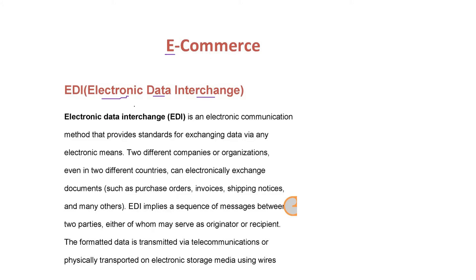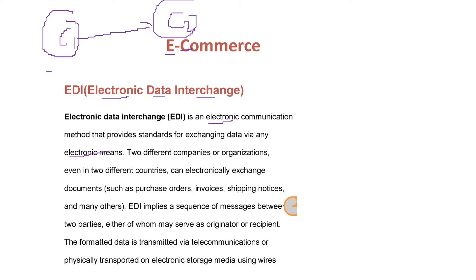EDI is an electronic communication method where we use digital media to provide standards for exchanging data via any electronic means. We have company one and company two — they may be in different countries and can electronically exchange documents like purchase orders, invoices, and shipping notices. EDI implies messages or a sequence of messages between two parties; C1 can be the originator and C2 the recipient, or vice versa.